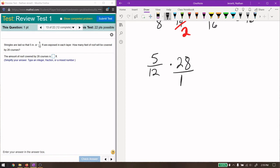So we just take 5 twelfths times 28 courses. I'm going to write this as 28 over 1. And we can reduce. 12 divided by 4 is 3. 28 divided by 4 is 7. Now we have 5 times 7 on top, and 3 times 1 on bottom. I think it was 12. That gives us 35 over 3.